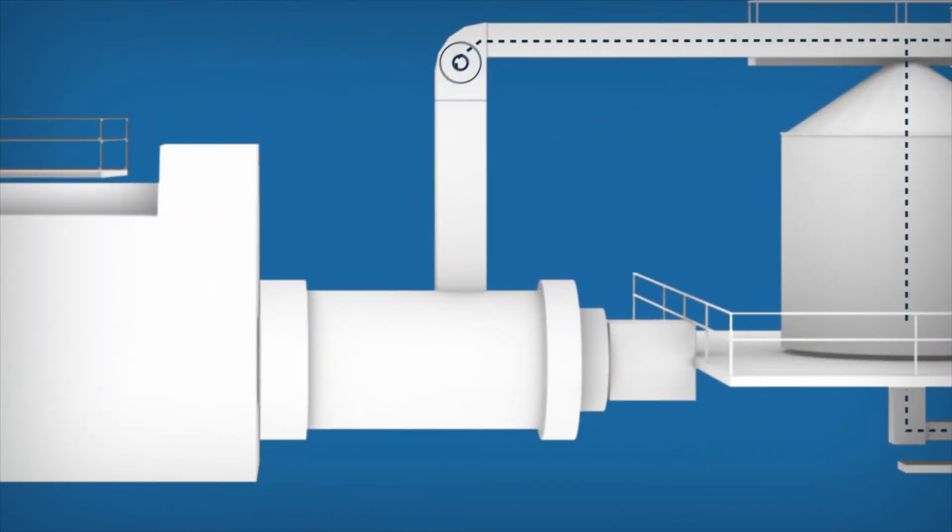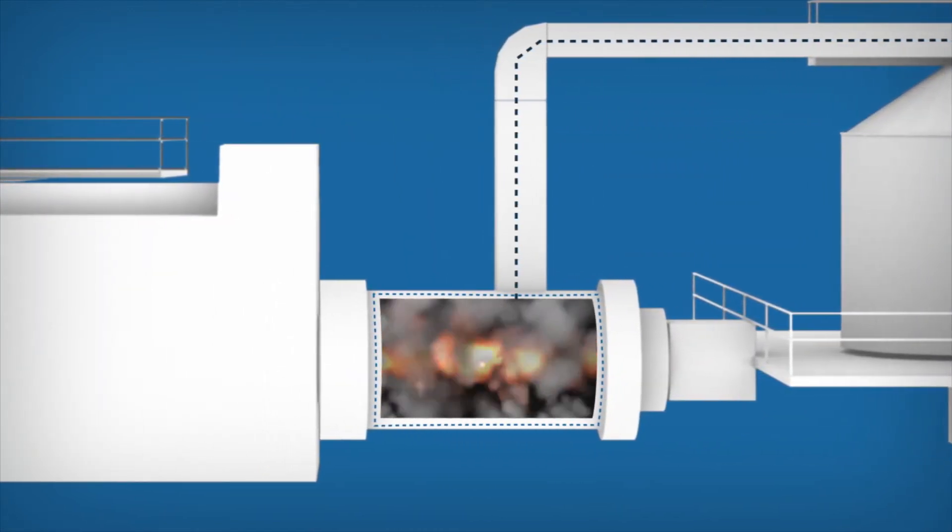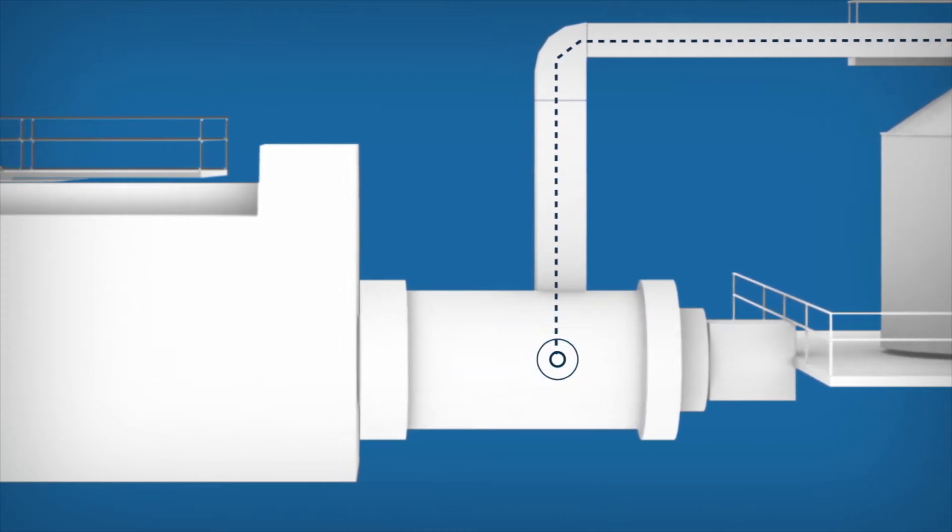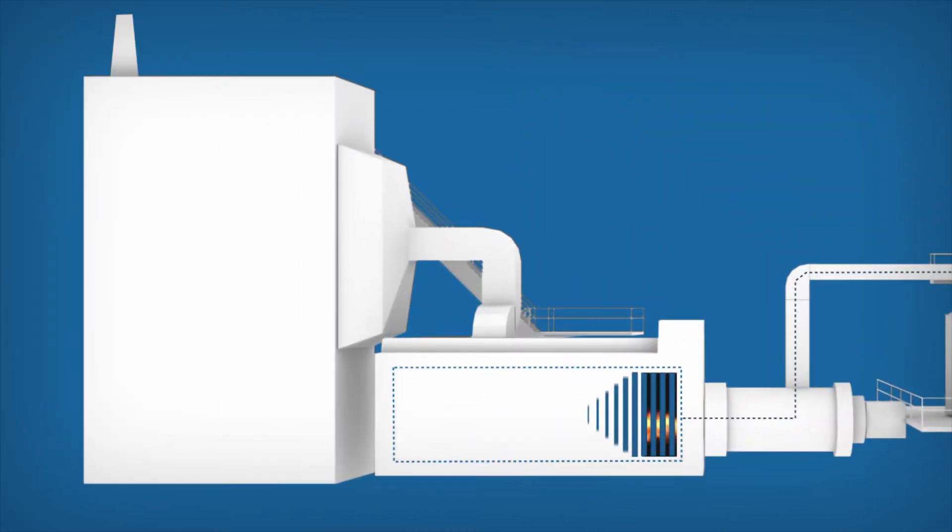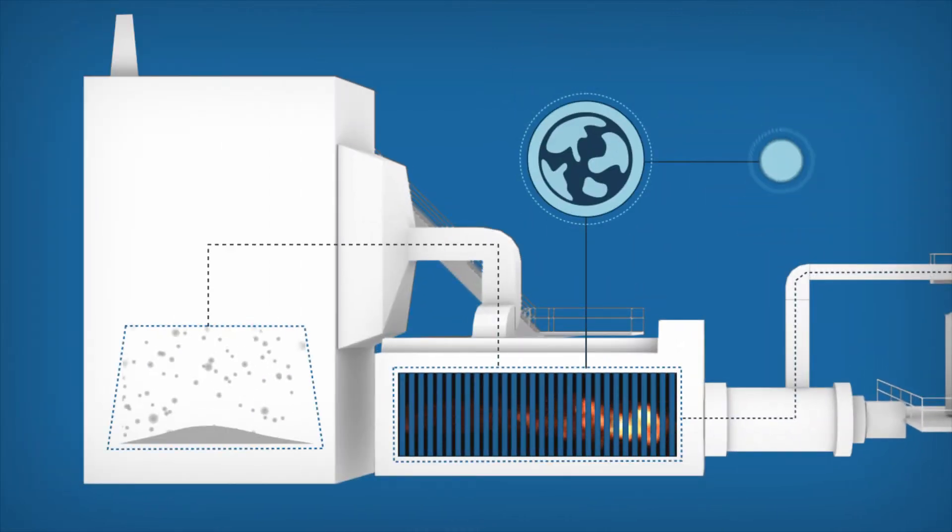Next, the syngas is directed into an ignition chamber within the boiler where it undergoes combustion. The syngas displaces natural gas so it's better for the environment and reduces costs.